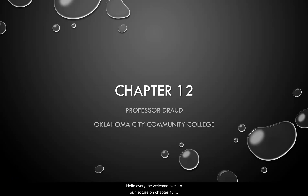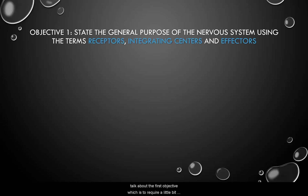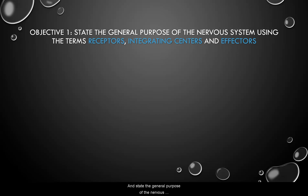Hello everyone, welcome back to our lecture on chapter 12. This is Professor Drought, and let's get right into it today. We'll talk about the first objective, which is to recall a little bit from the beginning and state the general purpose of the nervous system using the terms receptors, integrating centers, and effectors.